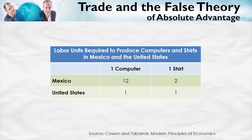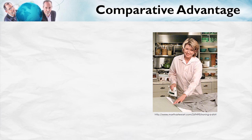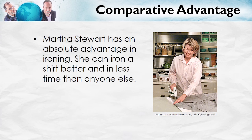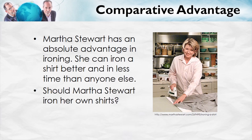That's the theory of absolute advantage. It's very plausible. It's also very wrong. To see why it's wrong, let's take another simple example. Here's a picture of Martha Stewart ironing her shirt. Let's stipulate that Martha Stewart has an absolute advantage in ironing — just like the United States had an advantage in producing computers and shirts. In other words, Martha Stewart can iron a shirt better and in less time than anyone else. So should Martha Stewart iron her own shirts? Of course, the answer is no.